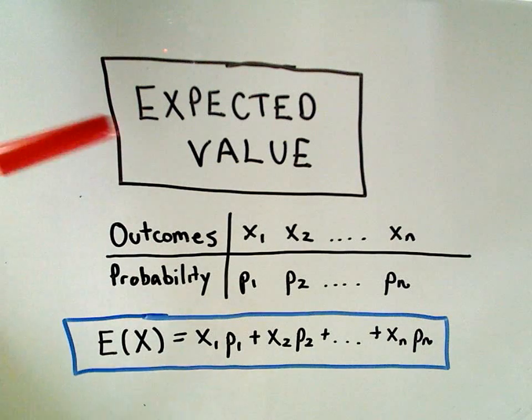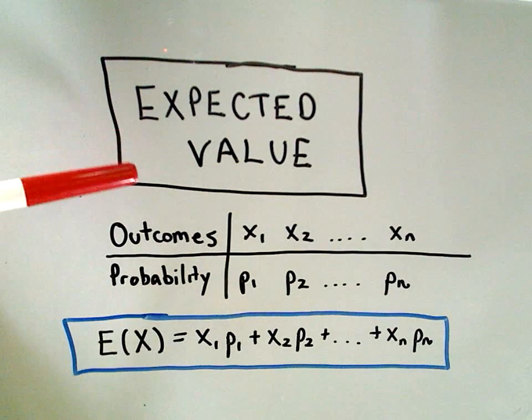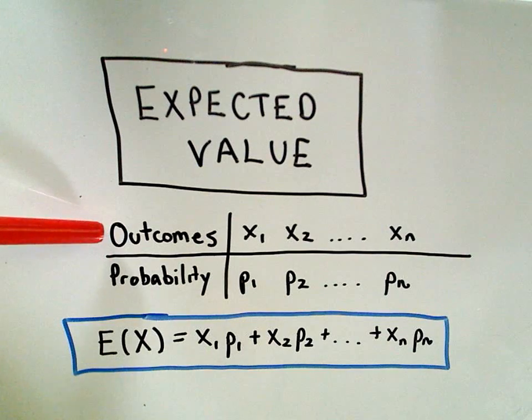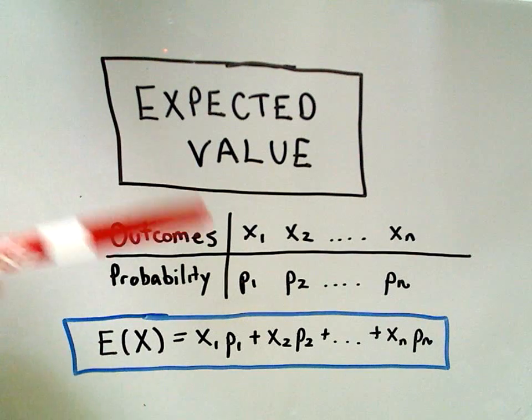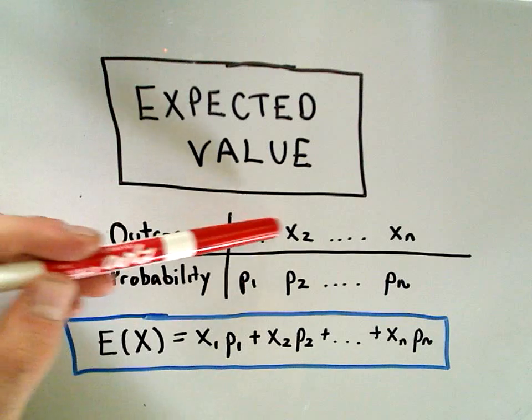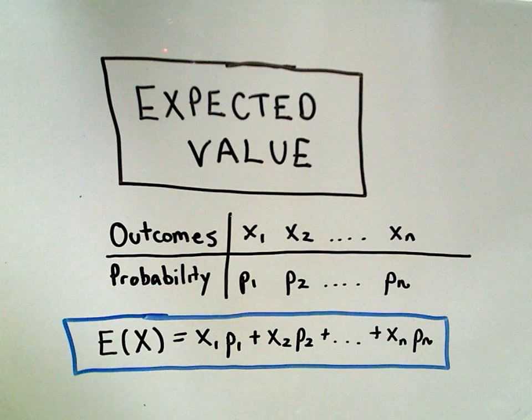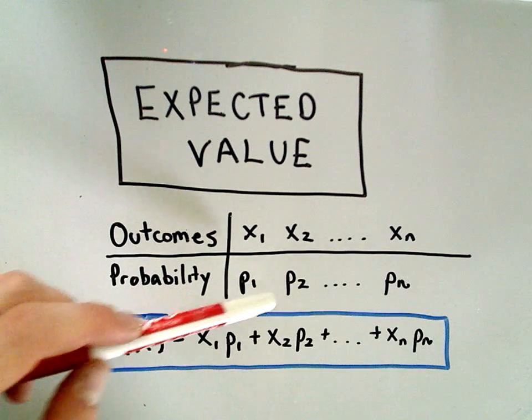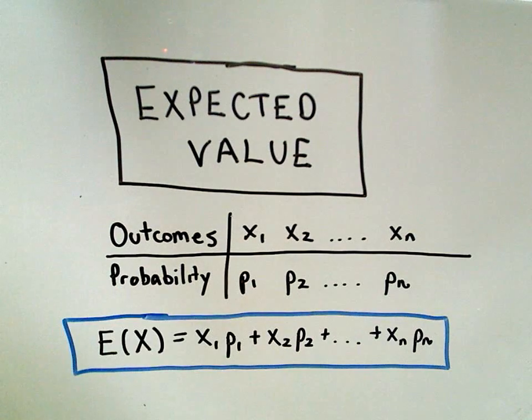Okay, in this video I'm going to talk about finding the expected value of a data set that has finitely many outcomes. So my outcomes here are labeled x sub 1, x sub 2, up to x sub n, and these will occur with probability p sub 1, p sub 2, up to p sub n, respectively.